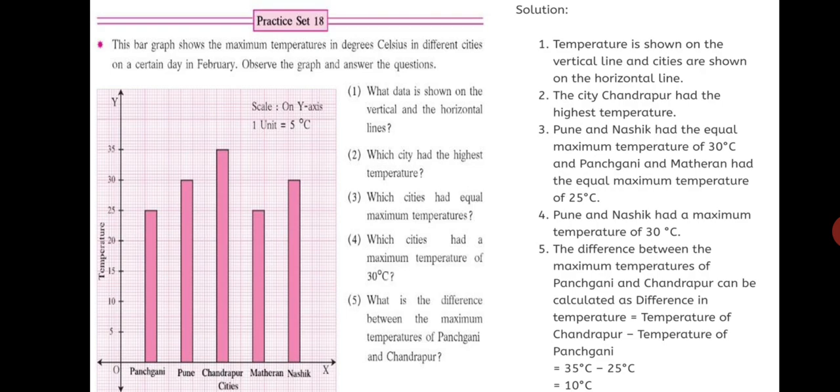Now, you will say maximum temperature is 30 not 25. But look at the question. Maximum temperatures of cities are given in degree Celsius. So, each one has its own maximum temperature. So, we have to mention all the cities which have equal maximum temperatures. So, we got two pairs. First Pune and Nashik. And second Mathiran and Panjgani. Question number 4. Which cities had a maximum temperature of 30 degree Celsius? So, just now we saw that Pune and Nashik had a maximum temperature of 30 degree Celsius.